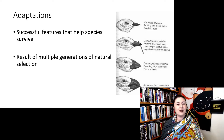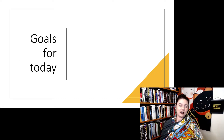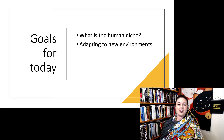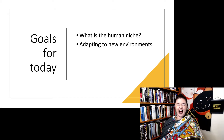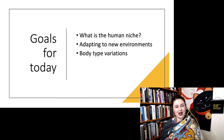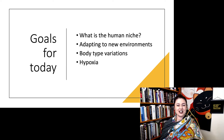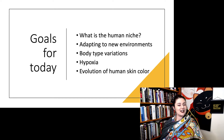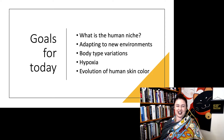We can apply similar concepts to any other organism, including humans, and we of course have many different features that help us survive. We're going to start talking about the human niche — the environment that we're adapted to. Then we'll talk about how we adapt to new environments, because humans are kind of everywhere. Then we'll talk about body type variations, a specific adaptation some populations have to hypoxic conditions, and lastly skin color and why we have so many different skin colors.